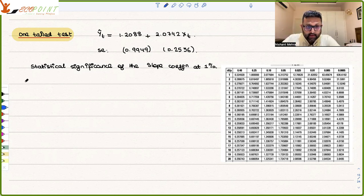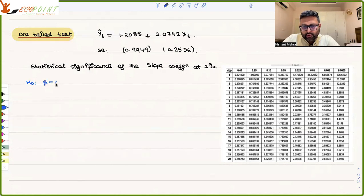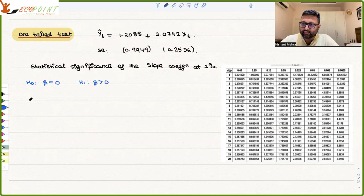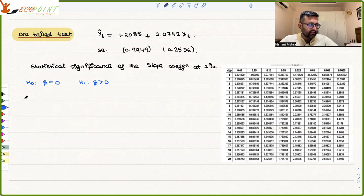I will set up the null hypothesis. I will say that beta is equal to 0. My alternative, since this is a one-tailed test, is that beta is greater than 0.